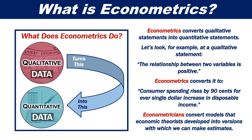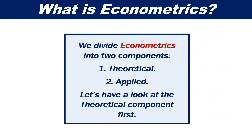Econometricians convert models that economic theorists developed into versions with which we can make estimates. We divide econometrics into two components: theoretical and applied.